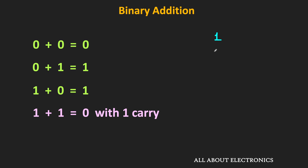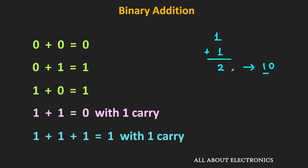In the decimal number system, 1 plus 1 is equal to 2, and the binary equivalent of 2 is 10. So in binary, when we do the column by column addition, this 1 will go to the next column as a carry. Therefore, 1 plus 1 is equal to 0 with 1 as a carry to the next column. Similarly, while adding 1 plus 1, if we have a carry from the previous column, then the addition is equal to 1 with 1 as a carry to the next column.